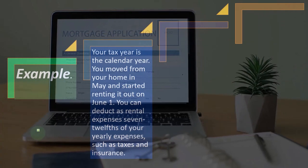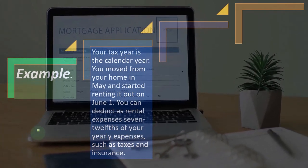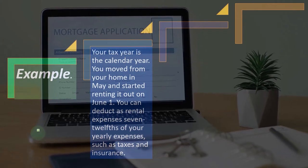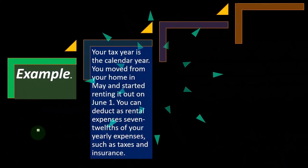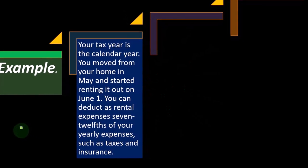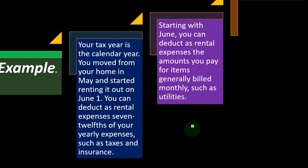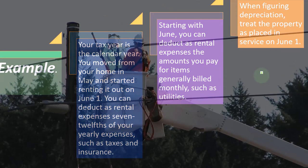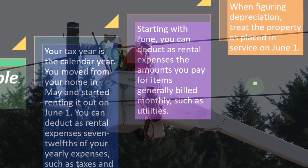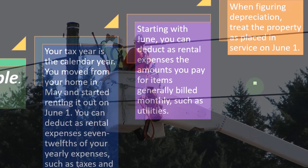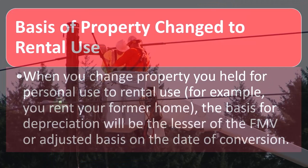Example: your tax year is the calendar year. You moved from your home in May and started renting it out on June 1st. You can deduct as rental expenses 7/12 of your yearly expenses such as taxes and insurance — that's the ratio of 7 months over 12. Starting with June, you can deduct amounts you pay for items billed monthly, such as utilities. When figuring depreciation, treat the property as placed in service on June 1st, because that's when you moved it from personal use to rental use.